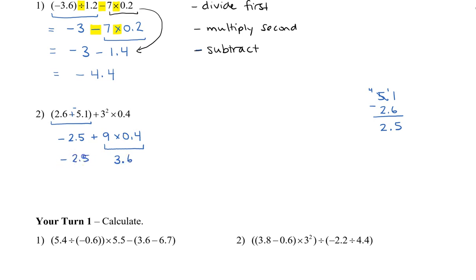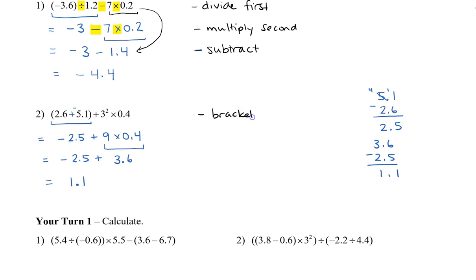We bring all the other numbers down and put equal signs. Notice that we keep working down. Next, we're going to do the multiplication because that comes before we add. We have 9 times 0.4 — we know that 9 times 4 is 36, and because of the decimal, we have 3.6. Finally, we go negative 2.5 plus 3.6. We can do this on the side: 3.6 minus 2.5 is 1.1, and we have more positives, so our answer is 1.1. So that's how we work through an order of operations question with decimal values.